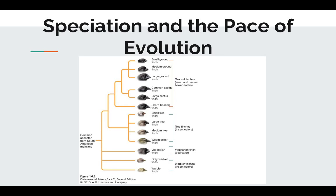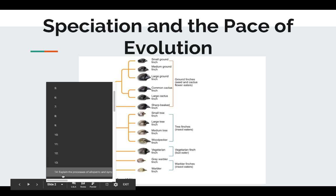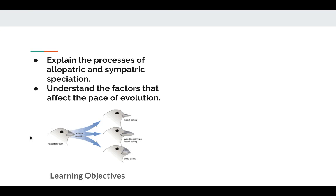Hey everyone, welcome to another AP Environmental Science lecture. Today we're going to look at two things in regards to evolution. We're going to start off with speciation, and then move on to the pace of evolution. Over time, speciation has given rise to millions of species on Earth today. Environmental scientists are interested in understanding how quickly existing species can change, how quickly new species evolve, and how quickly species can go extinct. We'll examine the processes that produce new species and the factors that determine how rapidly they can evolve in response to environmental changes.